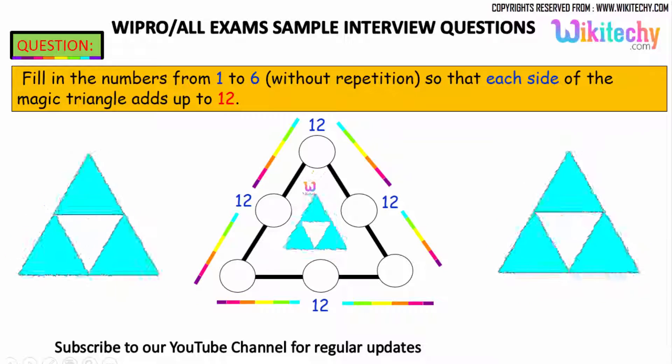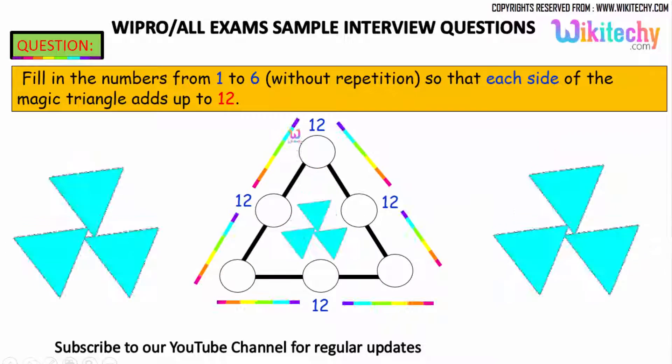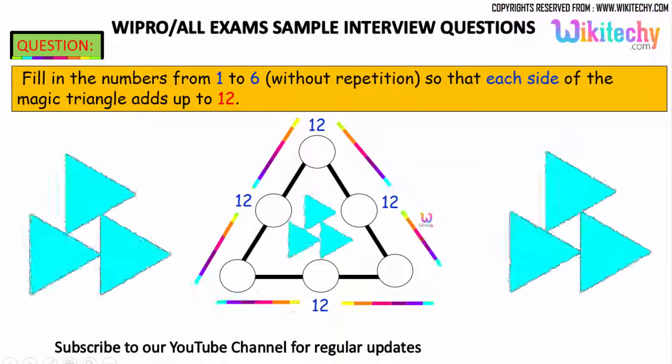Fill in the numbers from 1 to 6 without repetition so that each side of the magic triangle adds up to 12. That is the question.